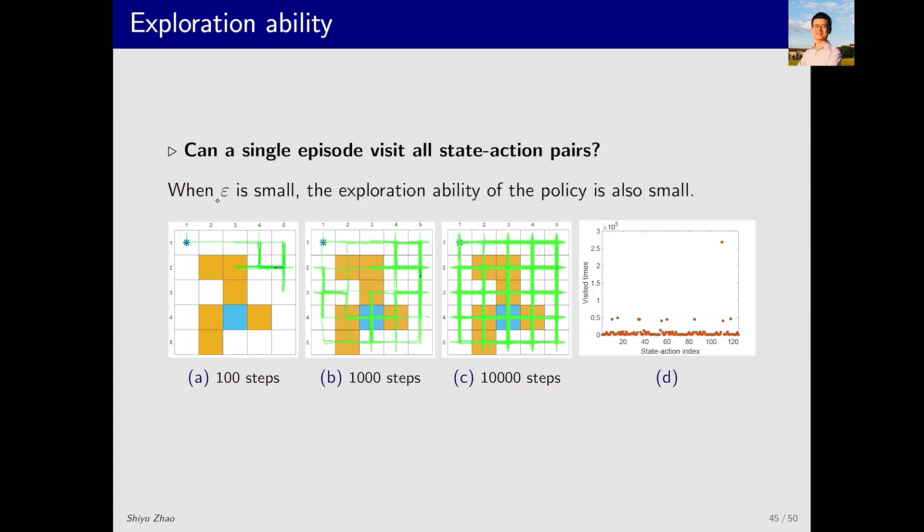Another example has a relatively small value of epsilon. Naturally, the exploration ability of the policy is weaker compared to larger epsilon values. For instance, with 100 steps, we can observe, even though I have not plotted the epsilon greedy policy here, that when the number of steps is relatively small, the agent visits fewer states because its preference is stronger. Even with 1000 or 10,000 steps, there are still some actions that have not been visited.